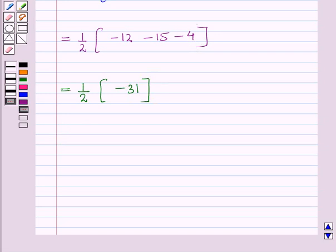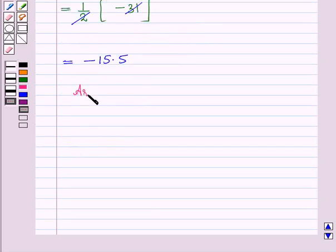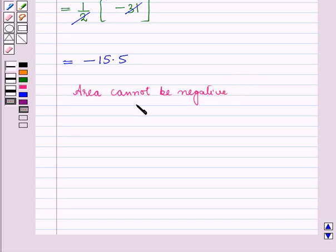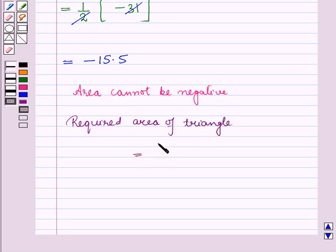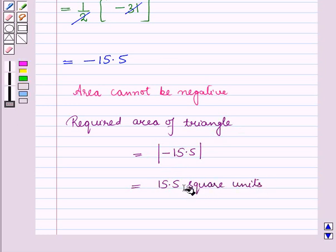Since area cannot be negative, we always take the absolute value of the determinant. Therefore, the required area of the triangle is the absolute value of −15.5, which equals 15.5 square units. This is the solution of the given question, and that's all for this session. Hope you all enjoyed the session.